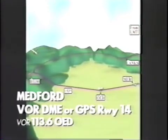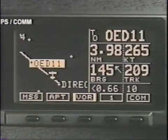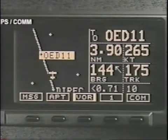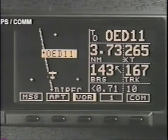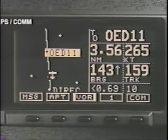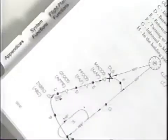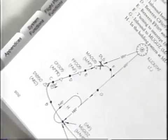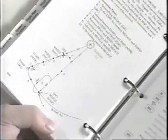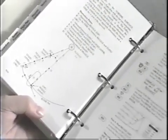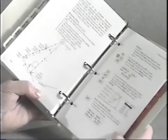As you intercept the OBS course at D3330, sequencing resumes. The CDI will begin to swing in and may be used for guidance as you turn to 153 degrees toward OED as the final approach fix. For additional information about these and other approach examples, or for more information about using the Apollo GX receiver for non-precision instrument approaches in general, please review your user's manual on a regular basis.